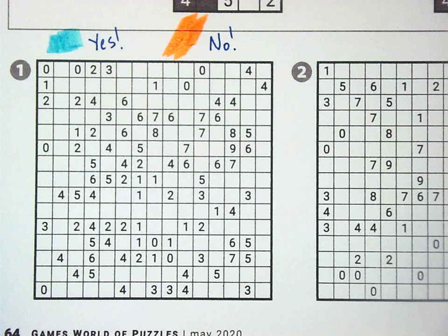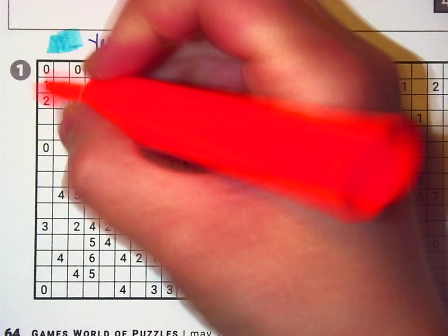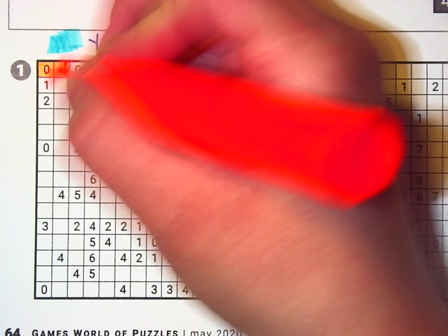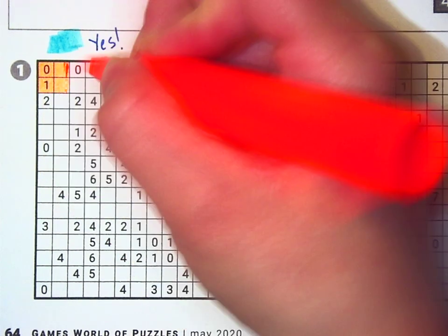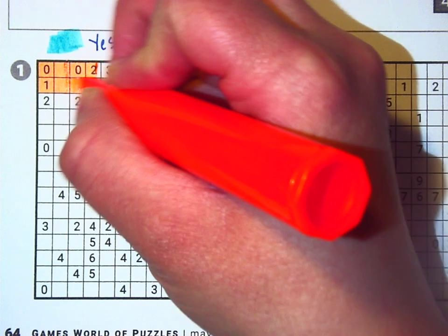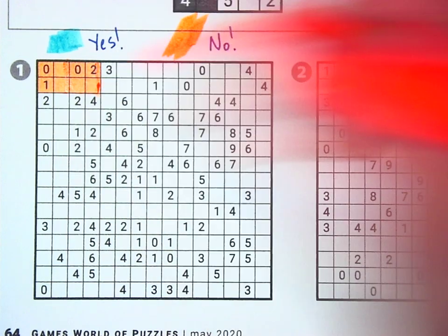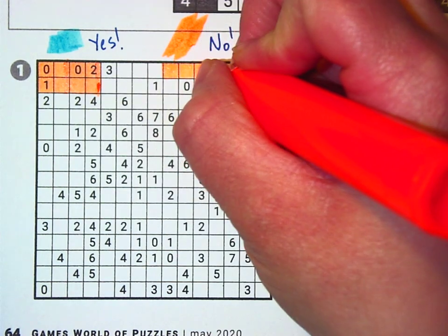We should start with the easy bits. The easy things would be anywhere you see a zero, because you know that those are all no's. So I'm going to go to all the zeros right now and color every square around it, including that square, my no color. You should be doing this with me right now.